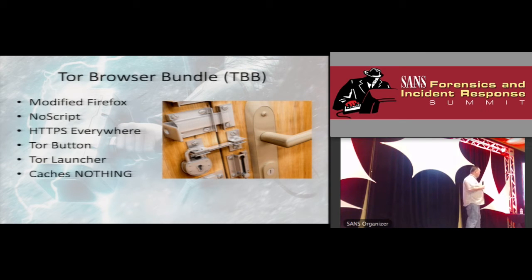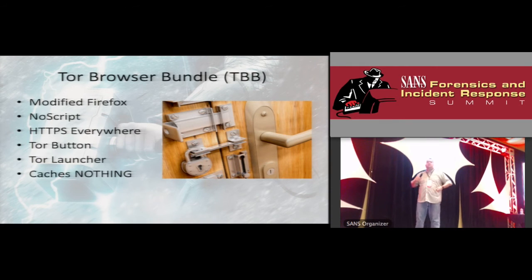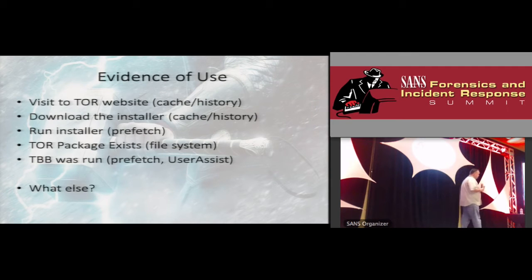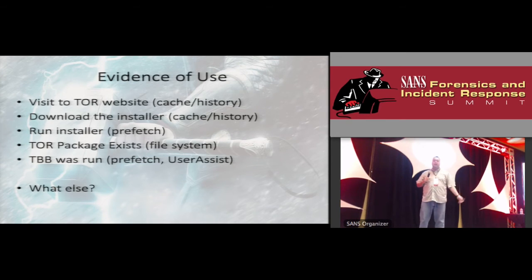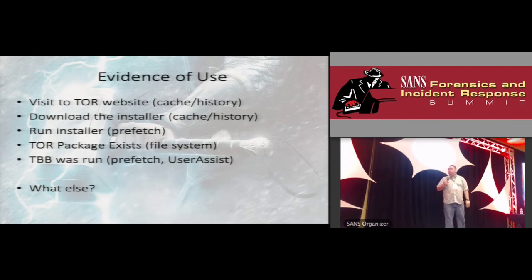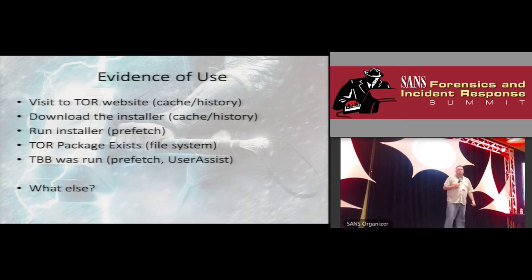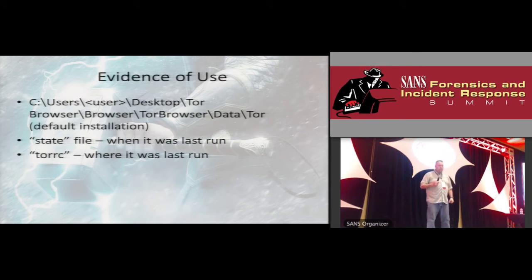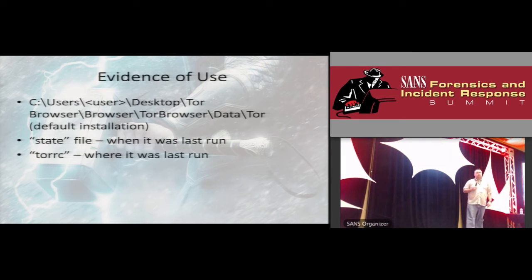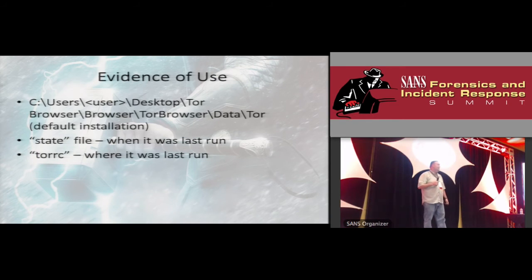Because of the way it works, the TBB caches nothing. Even if you took a live image of the drive, you'd still get nothing. What you can find is evidence of a visit to the Tor website — where they downloaded it, ran it, installed it, and continued to run it. TBB has a state file that tells you the last time Tor was run, and also a torrc file which tells you where it was last run from.